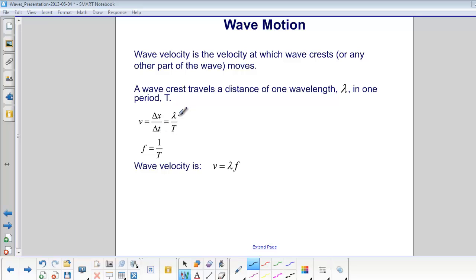Here, delta x is equal to one wavelength and delta t is equal to the period. Since frequency is equal to one over period, wave velocity can also be stated as v equals lambda f.